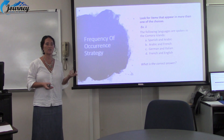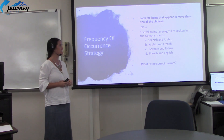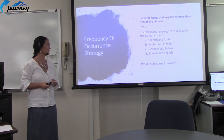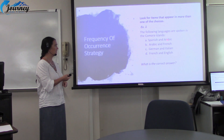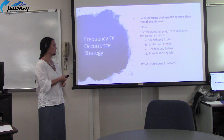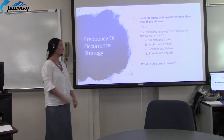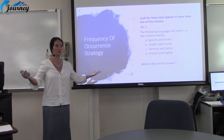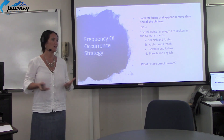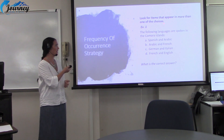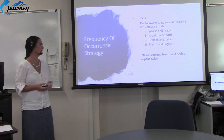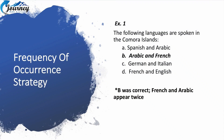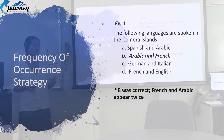Frequency of occurrence means it's mentioned more than once. Arabic appears in choices A and B — mentioned twice. French appears in choices B and D — mentioned twice. Now if you knew nothing about the Camara Islands and you're truly making an educated guess using this strategy, the answer is B, because both Arabic and French appear twice and they are both together in choice B. That is one strategy.